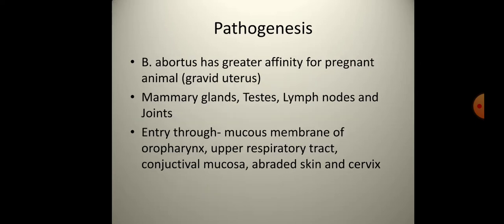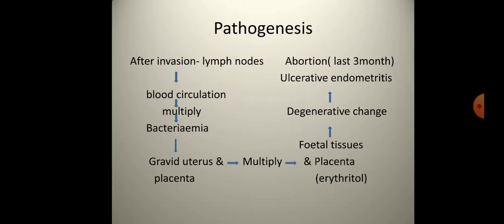Brucella has a greater affinity for pregnant animals. They affect the gravid uterus, mammary glands, testes, lymph nodes, and joints. Entry occurs through the mucous membrane of the oropharynx, upper respiratory tract, conjunctiva, mucosa, abraded skin, and cervix. After invasion, the organisms travel to the lymph nodes, enter the bloodstream, multiply, and cause bacteremia.